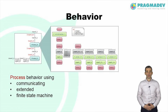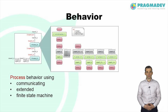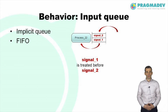Behavior in SDL is defined in processes using graphical finite state machines. The model of the finite state machine is that of Mealy, meaning that actions take place in the transitions and not in the states. State machines can perform operations on data and communicate using messages listed at the end points of the channel the process is connected to. Every process in SDL has an implicit queue for messages. Messages are consumed in the order they are received, that is, first in first out.